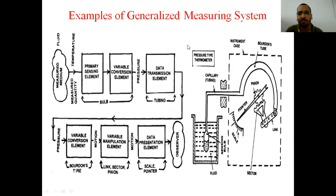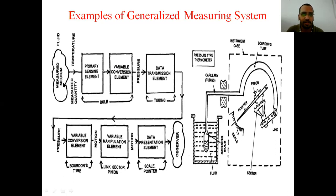This is an example of a generalized measuring system: a pressure-type thermometer. There is a fluid, a bulb, a Bourdon gauge with a link, sector gear, pinion, pointer, and scale. If you want to measure the temperature of the fluid, the bulb is the primary sensing element — it senses the temperature. The bulb also acts as a variable conversion element because the mercury inside expands due to the temperature increase, converting temperature into displacement. Due to the rise in mercury volume, pressure increases in the Bourdon tube.